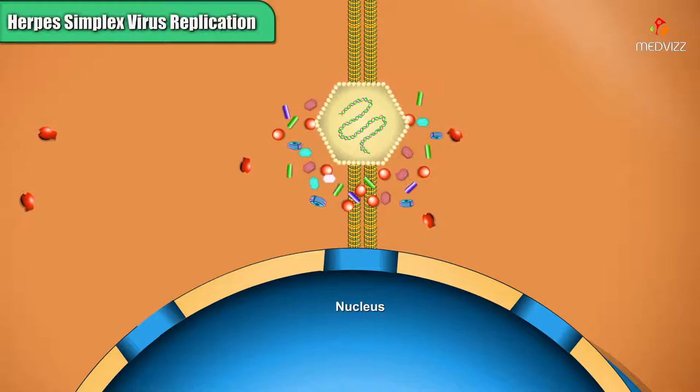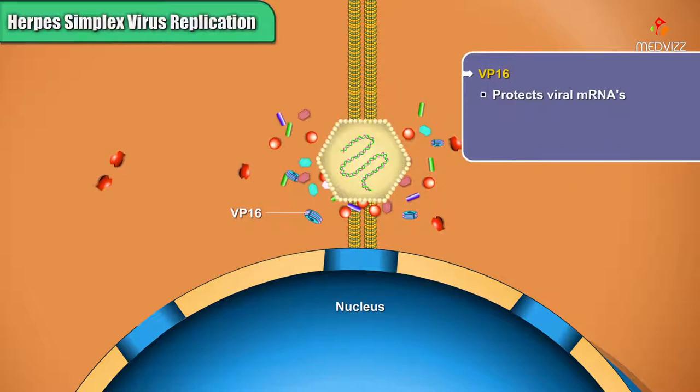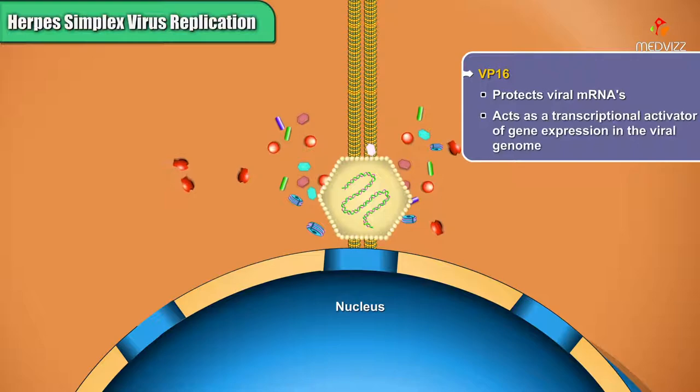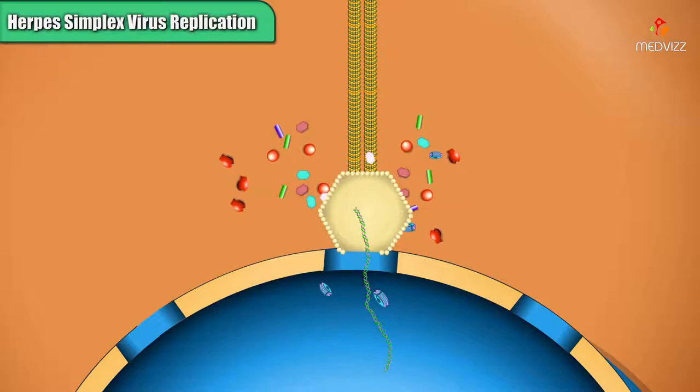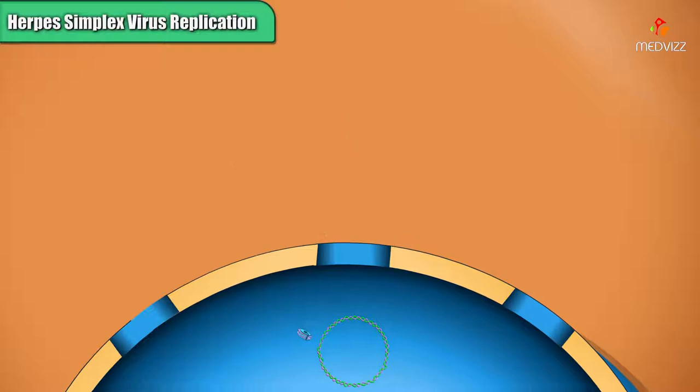Another tegument protein, called VP16, ultimately protects viral mRNAs. It also acts as a transcriptional activator of gene expression in the viral genome. At a nuclear pore, the herpes chromosome enters the nucleus. The DNA then circularizes to form a plasmid-like intermediate.